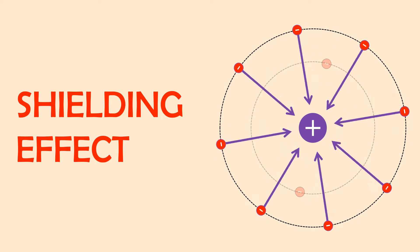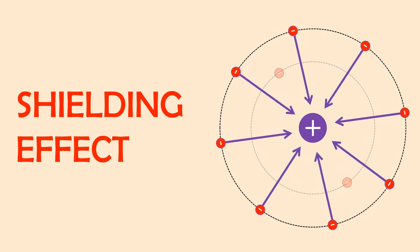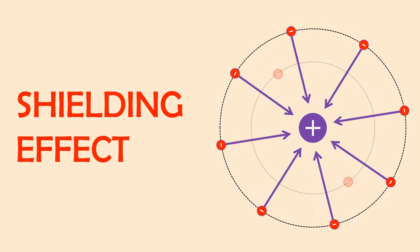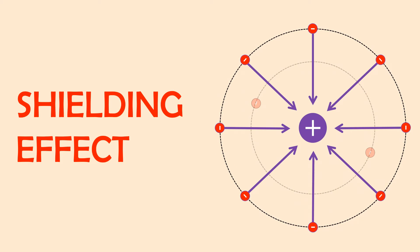The shielding effect and its trends in the periodic table are presented in this small video. Shielding effect is the decrease in the attractive force exerted by the nucleus on the valence shell electrons due to the presence of inner electrons. Inner electrons are the electrons present between the nucleus and the outermost shell of the element. The outermost shell is also called valence shell.